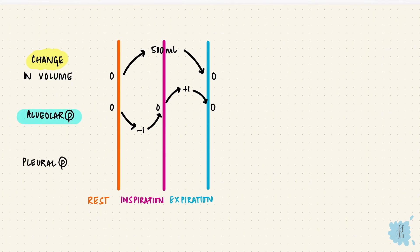The pleural pressure went from minus 5 at rest, to minus 7.5 at the end of inspiration, and then came back up to minus 5 again.